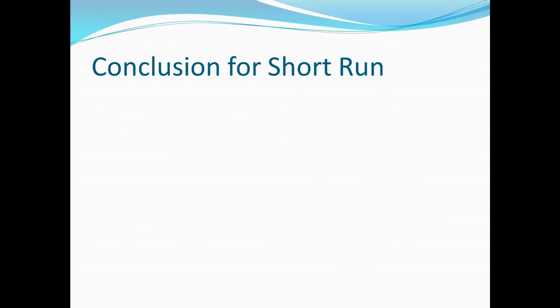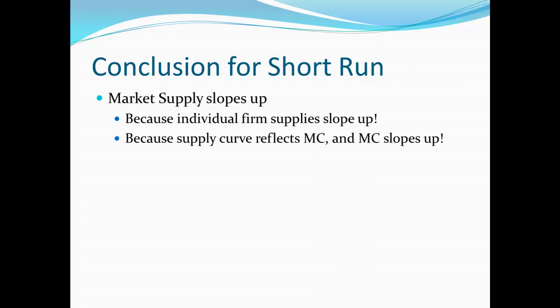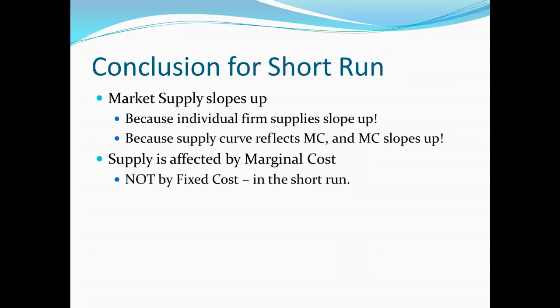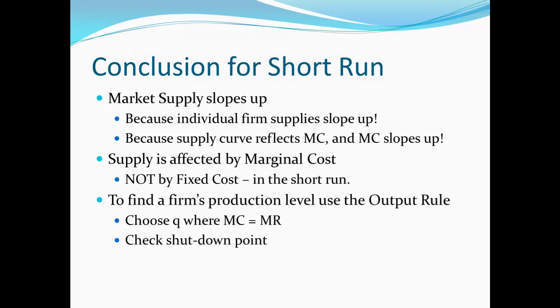When we wrap up the short run for price takers, we've proven that market supply must slope up because individual firm supplies slope up, and that happens because the supply curve reflects marginal cost, which slopes up. We've also pointed out that supply is affected by marginal cost — in effect because the supply curve is the marginal cost curve — and that fixed costs are not going to have any impact in the short run. In the long run they're going to matter, but we'll get there in a later video. Finally, to find a firm's production level, we use the output rule: choose the quantity where marginal cost and marginal revenue are equal. Remember to check the shutdown point — if the price has fallen too low, it might not be worthwhile to produce anything at all, so if we're below the shutdown point, we produce zero instead of following the output rule.